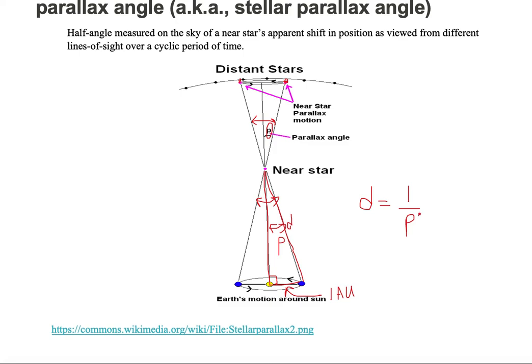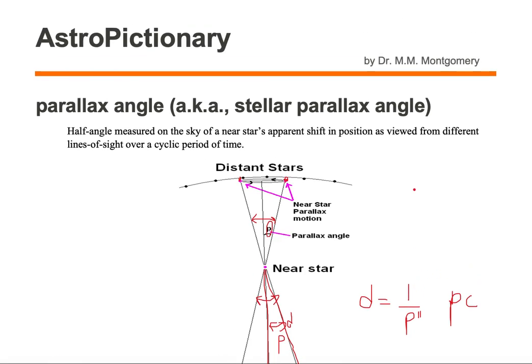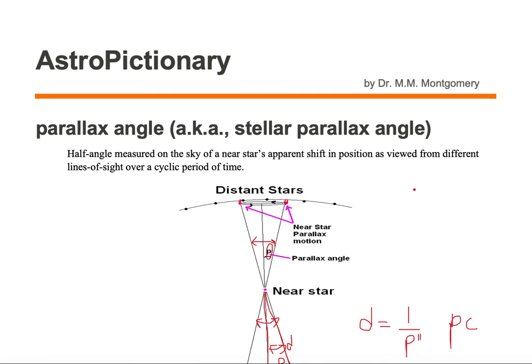Now we're going to measure that parallax angle in units of arc seconds, and therefore our distance units will be in units of parsec. This is what we mean by parallax angle.